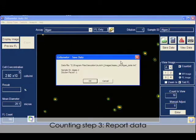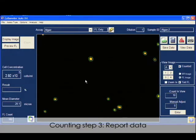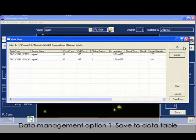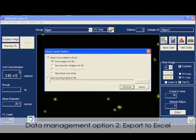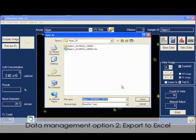Algae cell concentration and cell size histogram are automatically reported. Counting data is saved in a table for multiple samples. Export to Excel saves the information of each cell counted.